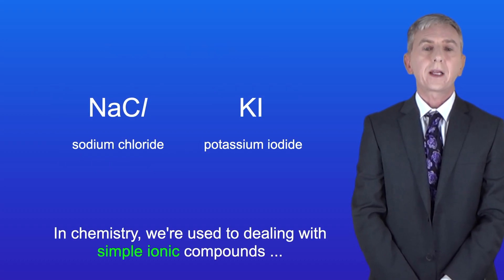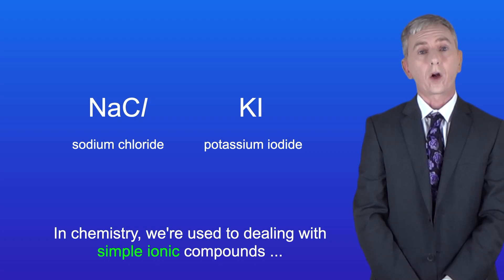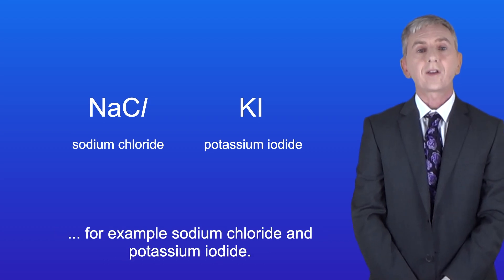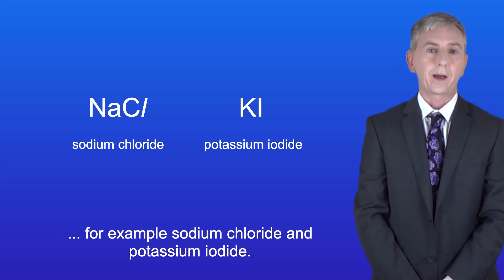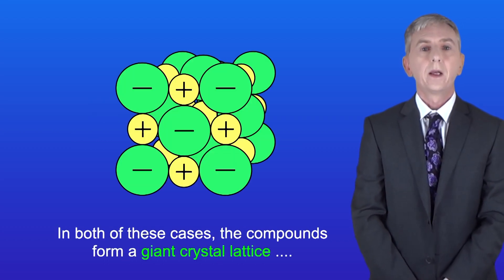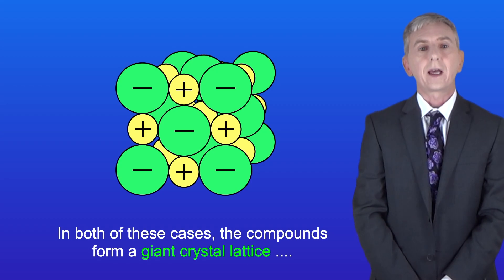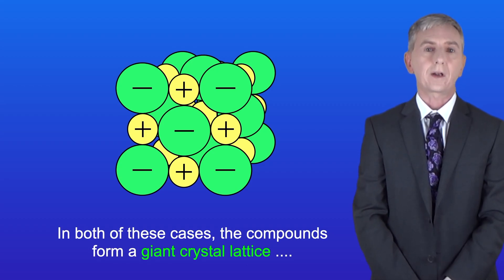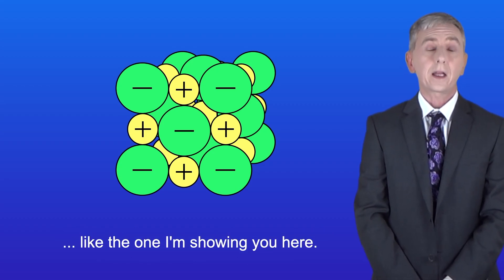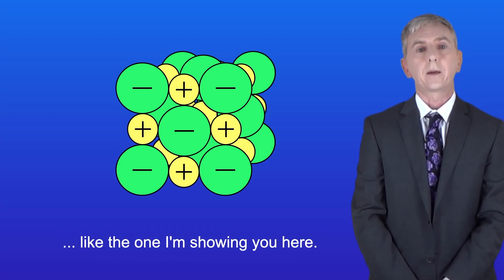In chemistry we're used to dealing with simple ionic compounds, for example sodium chloride and potassium iodide. In both of these cases the compounds form a giant crystal lattice, like the one I'm showing you here.